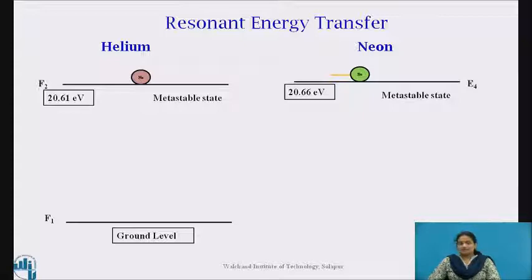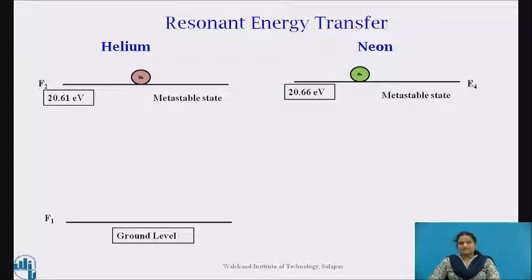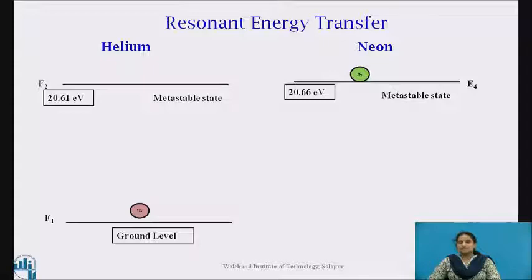Neon energy level E4 is at 20.66 electron volt, which is very close to the excited energy level F2 of the helium atom. Therefore, resonant energy transfer occurs between the excited helium atom and ground level neon atom. At the same time, the kinetic energy of helium provides the additional 0.05 electron volt required for excitation of neon atoms. Suddenly after this energy transfer, helium atoms come to the ground level, and this is the main pumping mechanism in helium-neon laser.